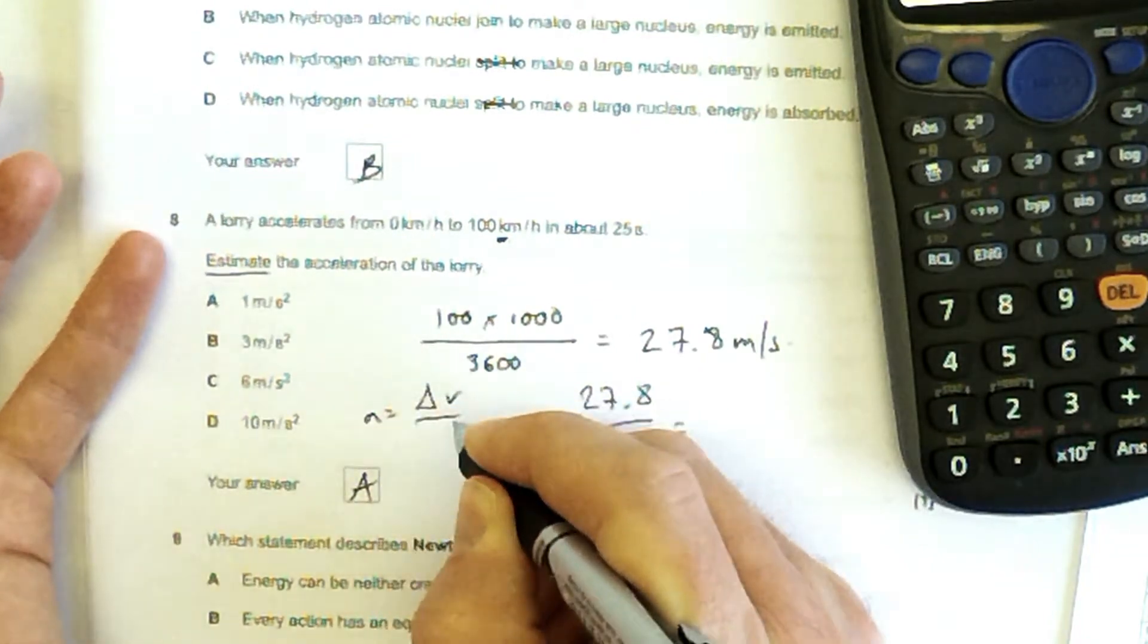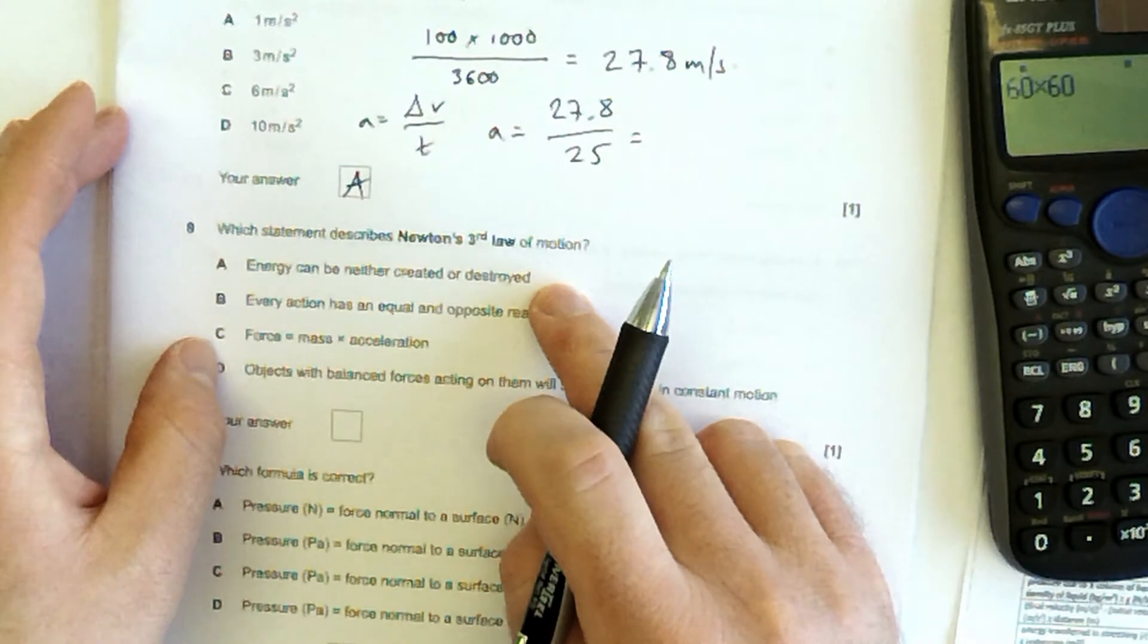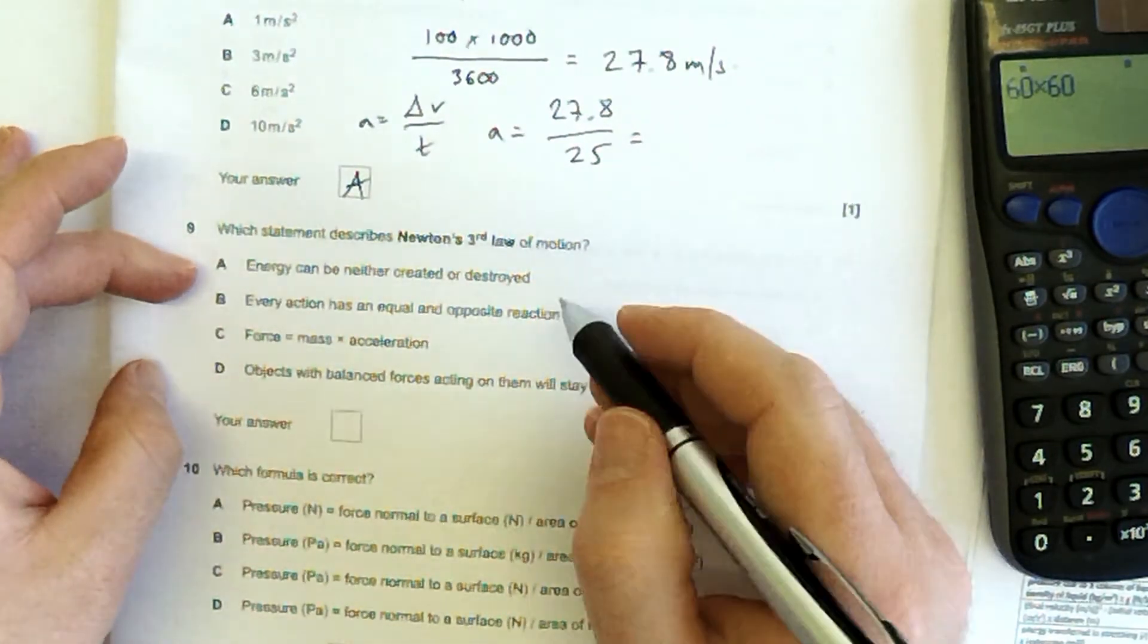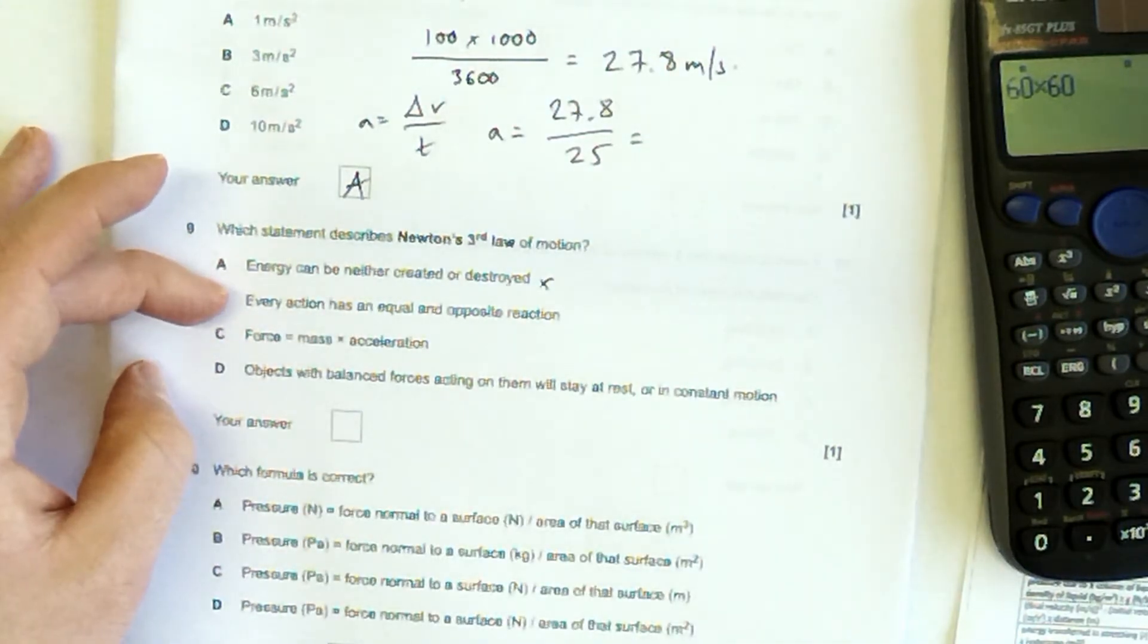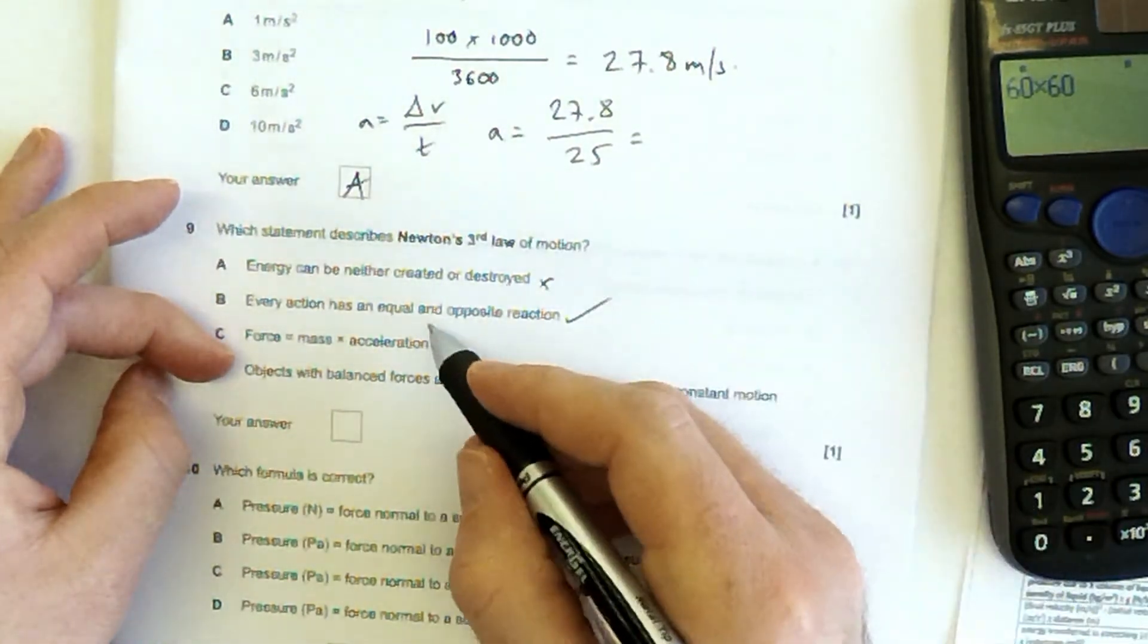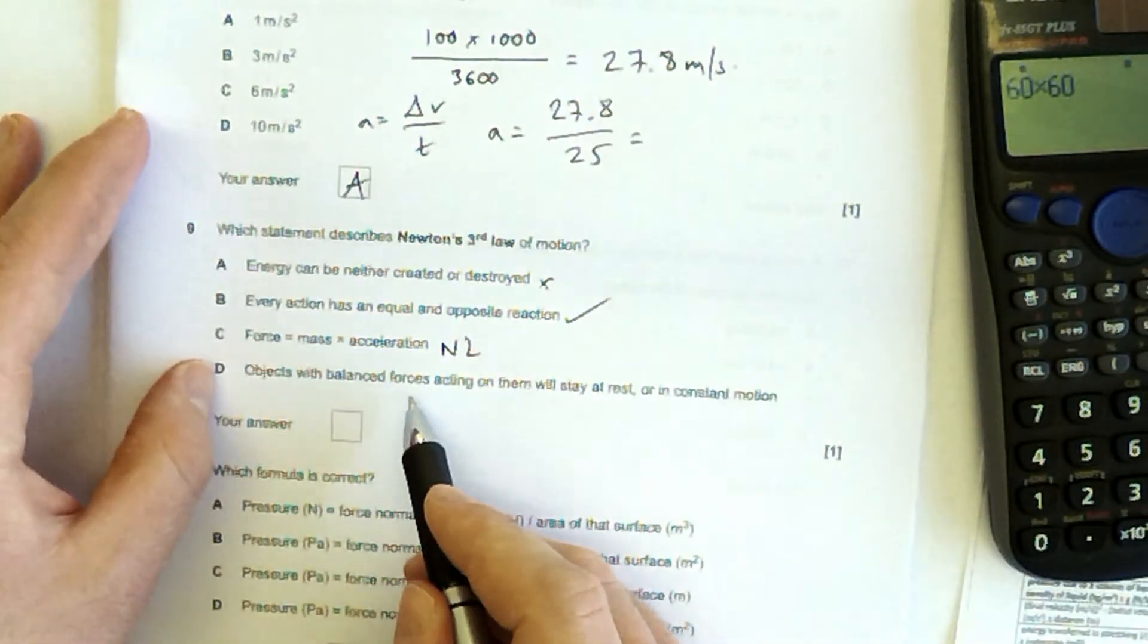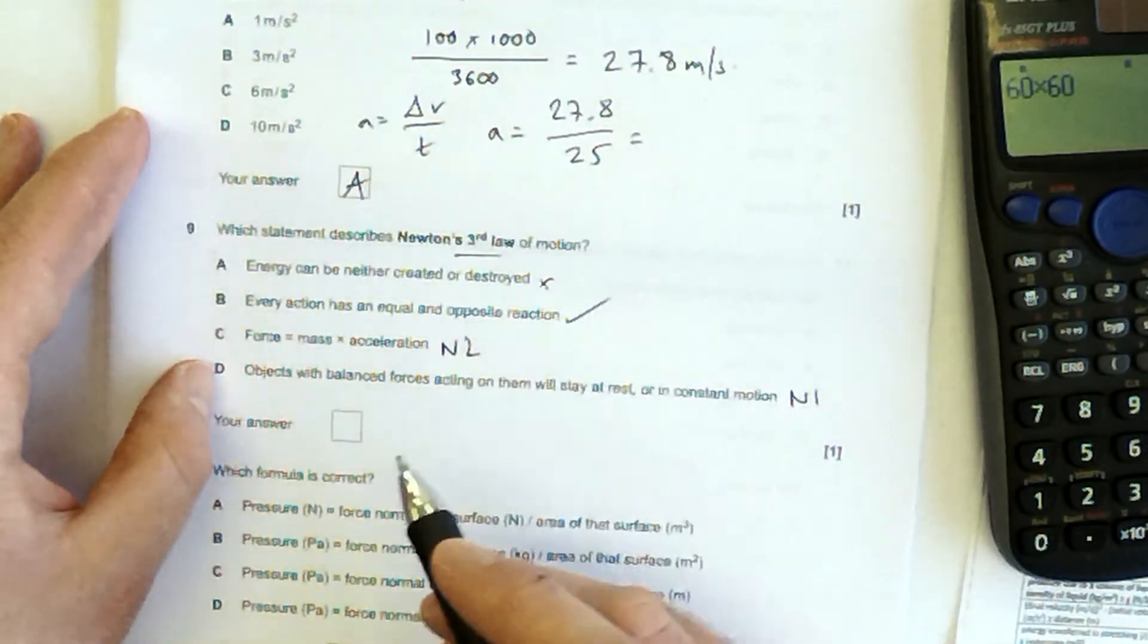So which statement describes Newton's third law of motion? Energy can neither be created or destroyed. No, that's the law of conservation of energy. Newton's third law is about forces. Every action has an equal and opposite reaction. That's Newton's third law. Let's just double check, though. That's Newton 2, isn't it? Force is mass times acceleration. Objects with balanced forces stay at rest or in constant motion. That's Newton 1. So we're after Newton's third law. So it's going to be B.